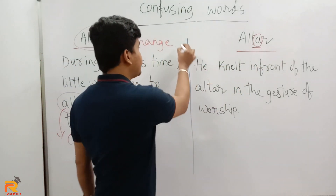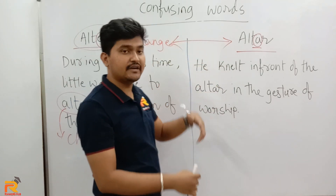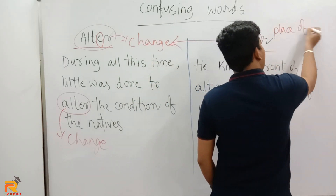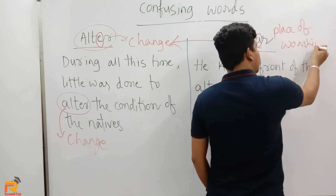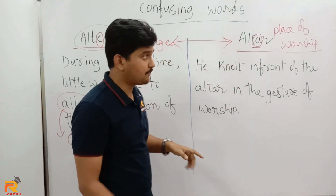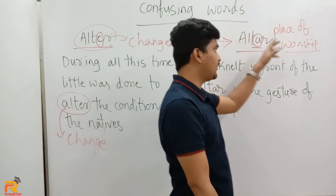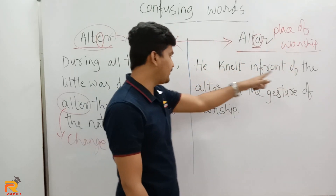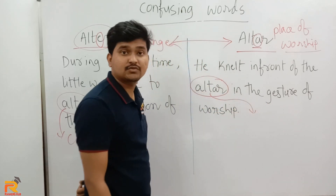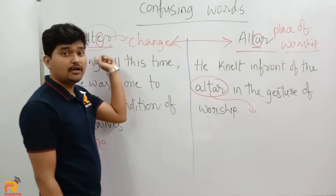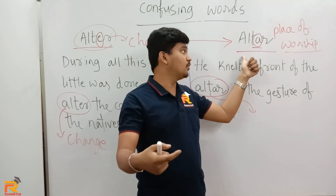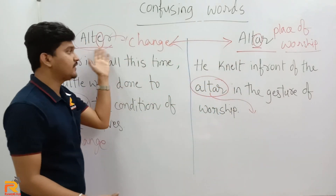Now what is the meaning of 'altar'? These two words are different, so identify the meaning carefully. Altar is a place of worship. Generally, altar refers to a table-like structure found in churches where people give their sacrifices. For example: 'He knelt in front of the altar in the gist of worship.' So altar is a place of worship. Altar means to change; altar is a place of worship.